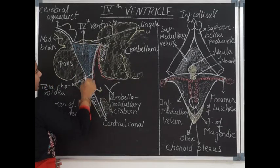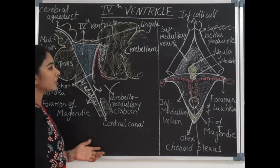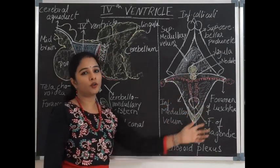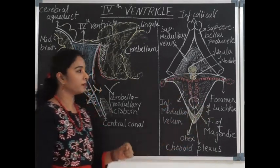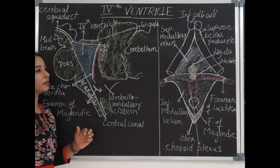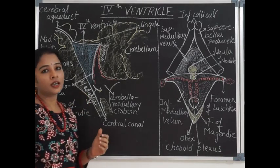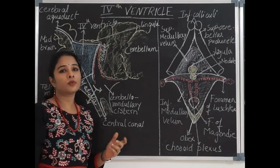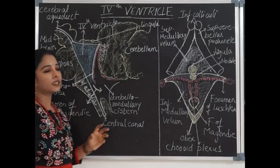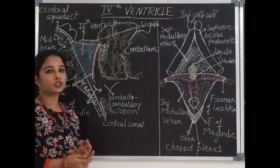In sagittal section the fourth ventricle appears triangular, and in horizontal section it appears rhomboid in shape. The fourth ventricle features can be studied under recesses, angles, and boundaries.